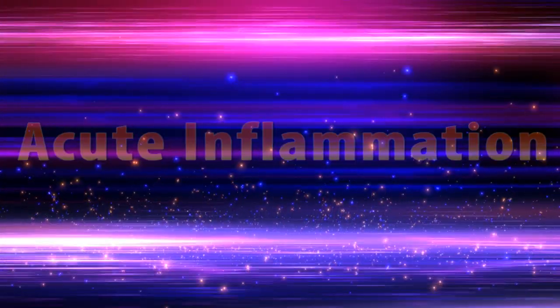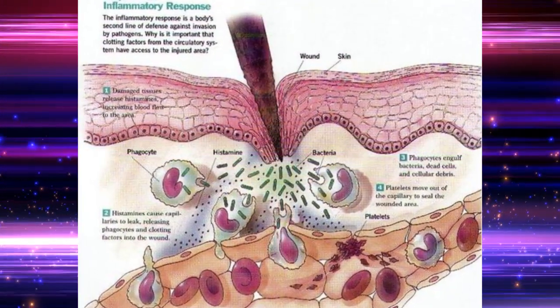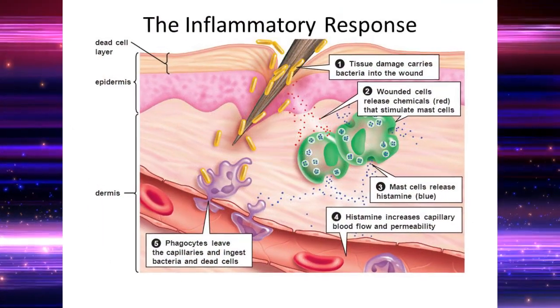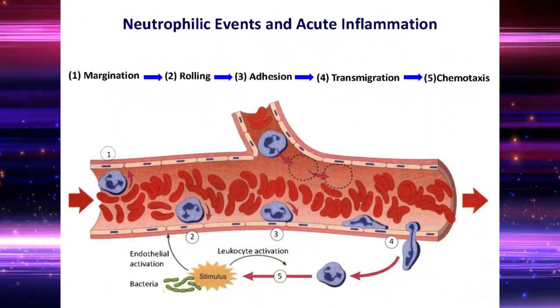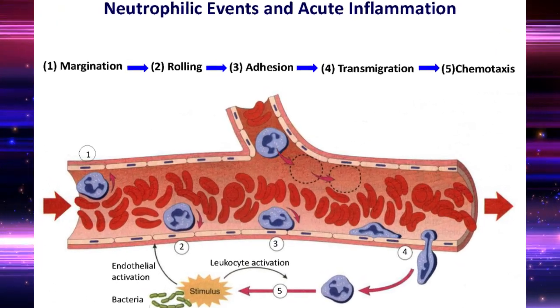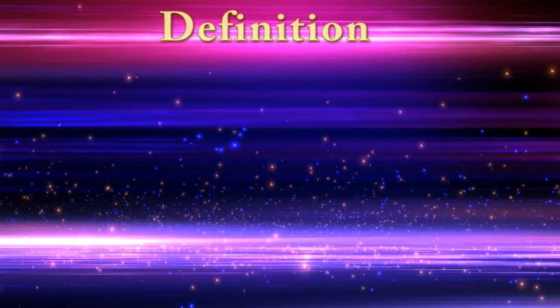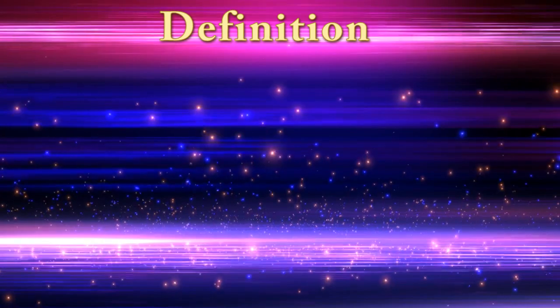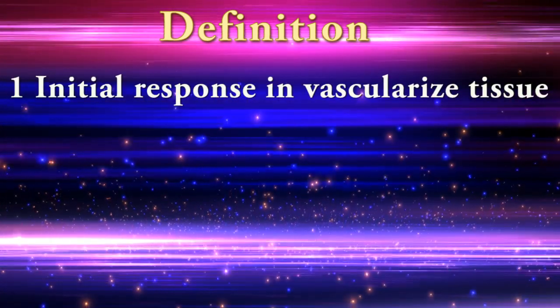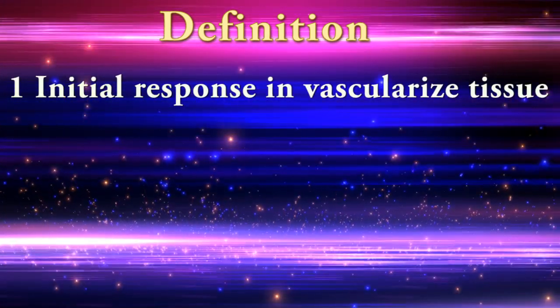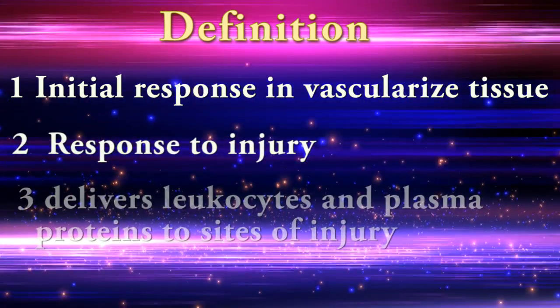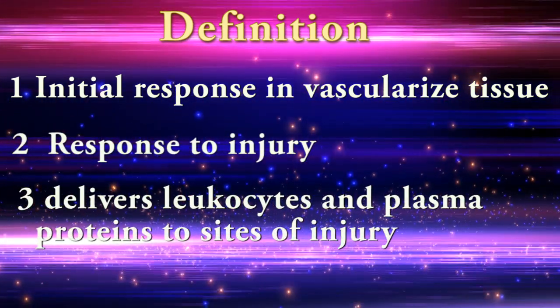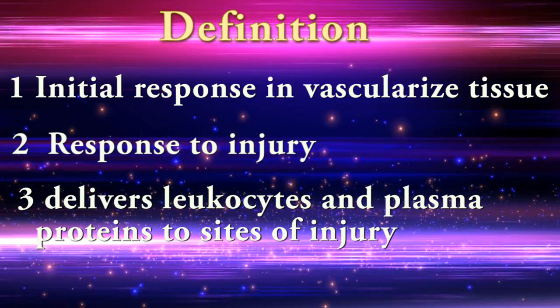Acute inflammation is the initial response in vascularized tissue to injury, achieved by delivering leukocytes and plasma proteins to sites of injury. This definition has three main points: one, initial response in vascularized tissue; two, response to injury; three, delivers leukocytes and plasma proteins to sites of injury.